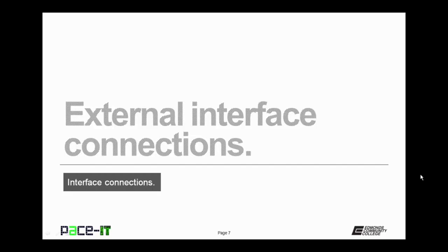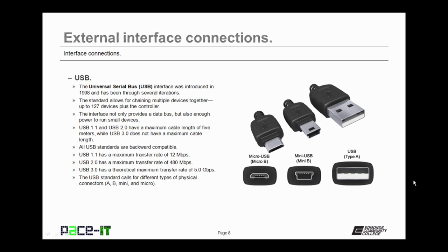Now that we're done with internal interface connections, let's move on to external interface connections, beginning with probably the most popular one — USB, the Universal Serial Bus. Introduced in 1998, it has been through several changes. The USB standard allows for chaining up to 127 devices plus the controller. USB can not only provide a data bus but also power to run small devices. USB 1.1 and 2.0 have a maximum cable length of 5 meters, but USB 3.0 does not have a maximum cable length as long as the cable meets the electrical specification.